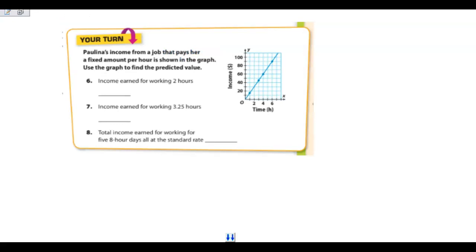Your turn. Paulina's income from a job that pays for a fixed amount per hour is shown on the graph. Use the graph to find the predicted value. The income earned for working 2 hours is what? So 2 hours is about here. Looks like these are going up by 10. So that would be 30. Income earned for 3 and a half hours would be what? Well, it looks like it starts at 0, 0. So I have the point 0, 0. And then I have 2 and 30 that I can use.